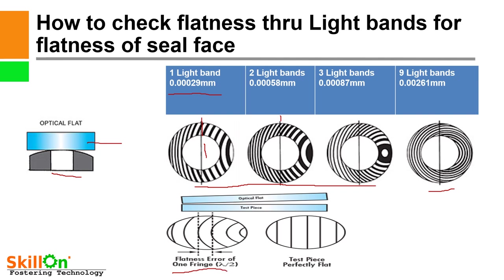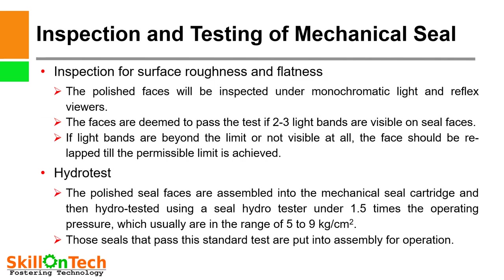Inspection and testing of mechanical seal: Inspection for surface roughness and flatness — the polished faces will be inspected under monochromatic light and reflex viewers. The faces are deemed to pass the test if two to three light bands are visible on the seal faces. If light bands are beyond the limit or not visible at all, the face should be re-lapped until the permissible limit is achieved. After flatness and surface finish inspection, we have to hydro-test the mechanical seal. The polished seal faces are assembled into the mechanical seal cartridge and hydro-tested using a seal hydro-tester at 1.5 times the operating pressure, usually in the range of 5 to 9 kg/cm². Those seals that pass this standard test are put into assembly for operation.